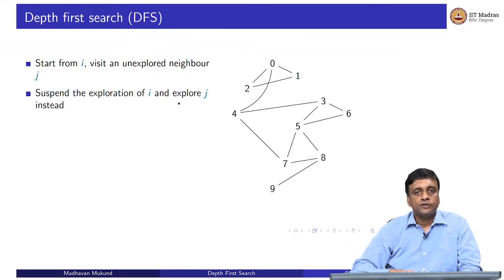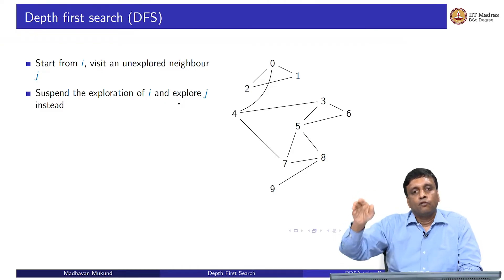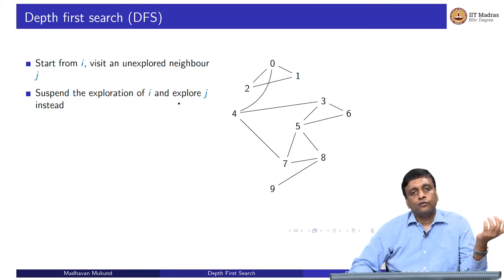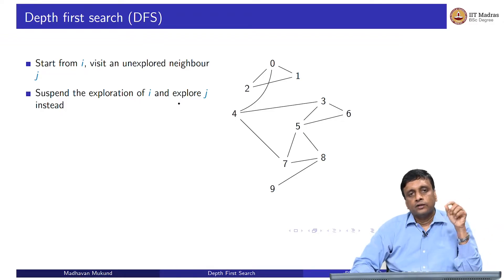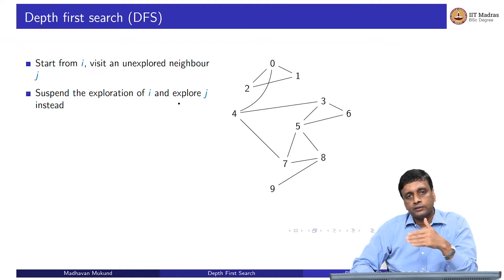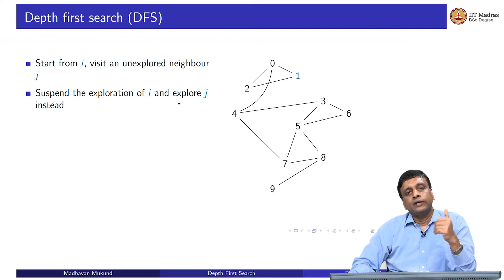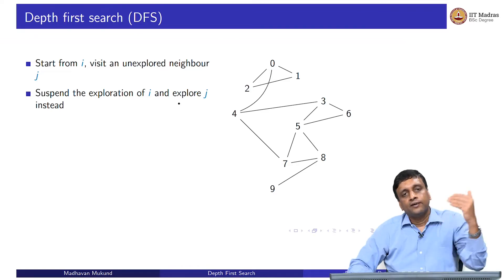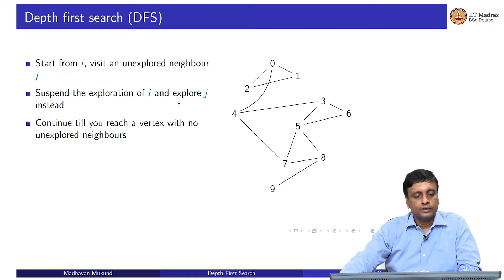Unlike breadth first search, where we explore all neighbors at the first level and then all neighbors at the second level, in DFS we follow exploration deeper. It is like reading a web page and clicking the first link you see instead of reading the rest of the text — you go to a new page and click the first link there, getting infinitely distracted. But in a finite graph this will actually work.